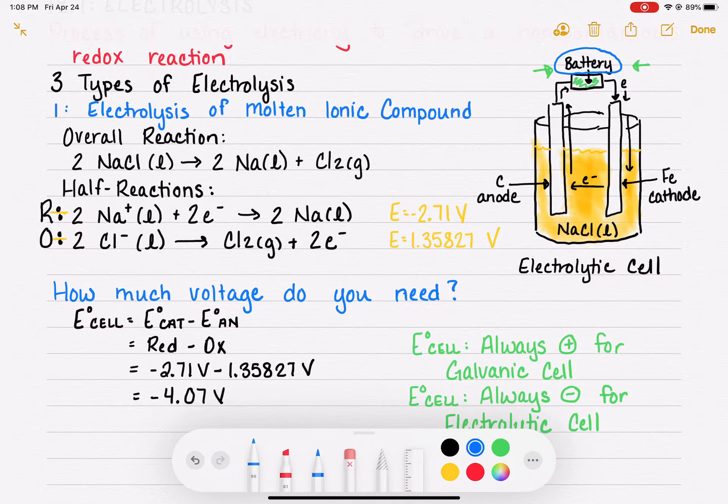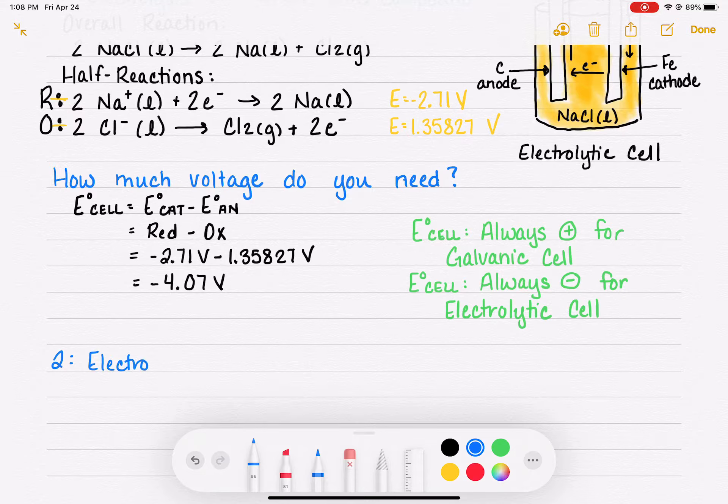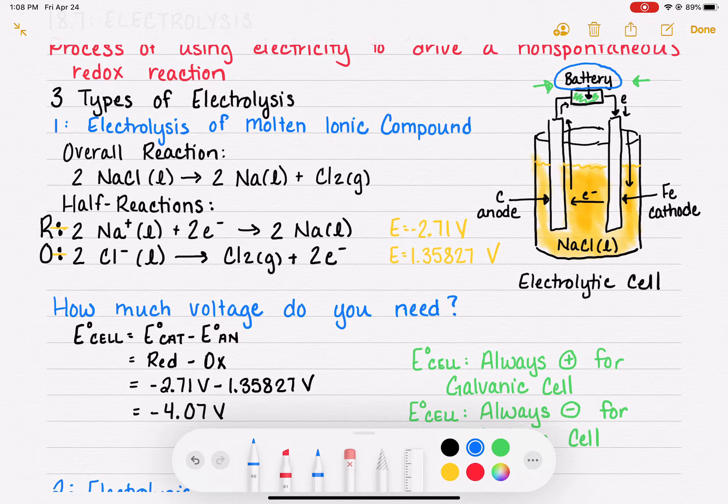The second type of electrolysis that we are going to talk about is the electrolysis of water. Remember at the beginning of this section I told you that these three different types of electrolysis are different only in terms of the type of substance that is undergoing electrolysis.